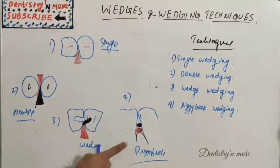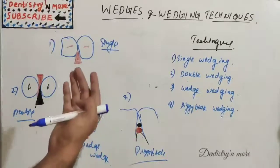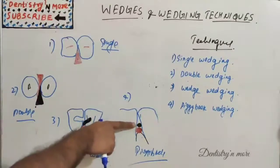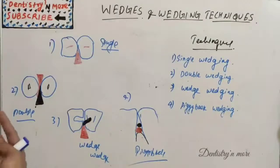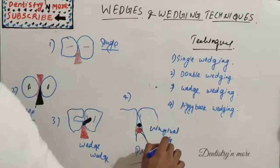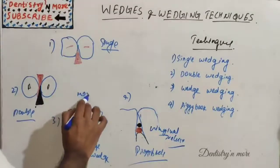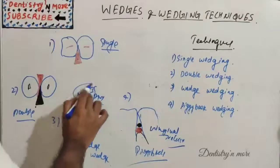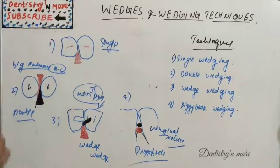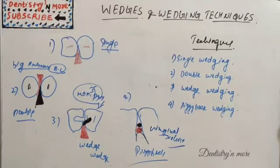The last technique is piggyback wedging, where two wedges are used: one larger wedge inserted normally, while the smaller one — the piggyback — is inserted above the larger wedge. It is indicated in cases of shallow proximal box with gingival recession. This technique provides closer adaptation and contour of the matrix band.